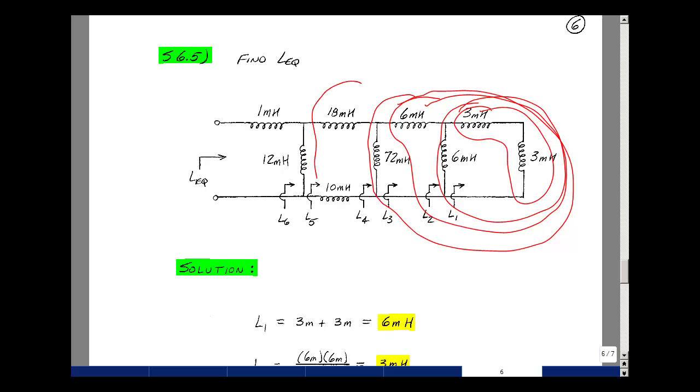So that's the inductance looking back here. And that's in parallel with 12 mH. So 12 mH times the 36 mH over the sum of those two, 12 mH plus 36, turns out to be 9 mH.